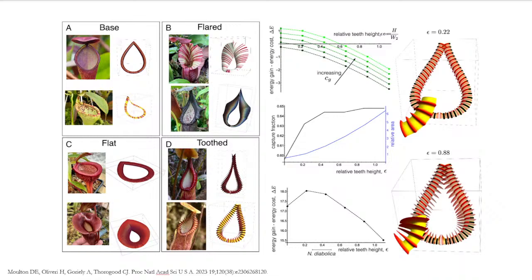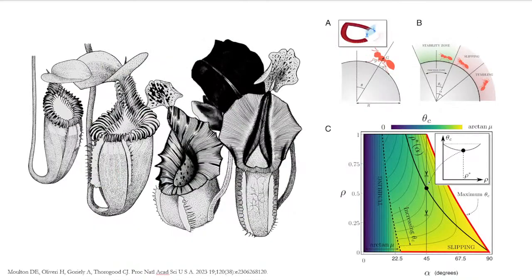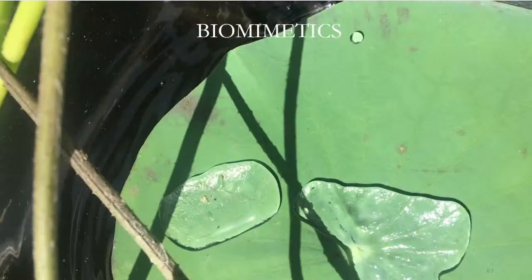We need to go and look at these plants in nature and understand that. We also found that different sizes of peristome have an impact on the prey that is caught, and this we published in PNAS.